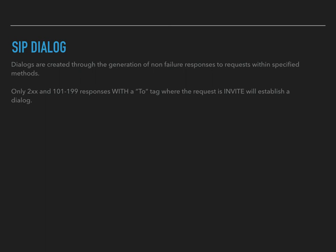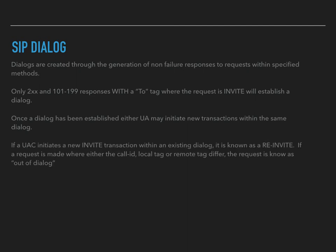It has to be an INVITE request, it has to have a final response code of 200, and the 101 through 199 responses are all optional. Once a dialogue has been established, either UA may initiate new transactions and keep them within the same dialogue. If a UAC initiates a new invite transaction within an existing dialogue, it's known as a re-invite. Keep in mind that at any given time within a dialogue, the original UAC can become a UAS, and a UAS can become a UAC, depending on who initiates that request. If a request is made where either the Call-ID, the local tag, or the remote tag differ, the request is now known as out-of-dialogue. As long as the remote tag, local tag, and Call-ID all remain the same, those are in-dialogue transactions.